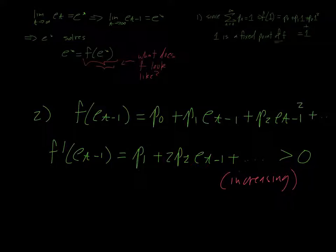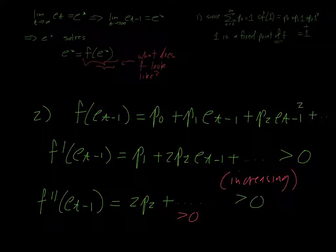And if we look at the second derivative, I'm assuming the first few probabilities here are positive. The idea is that you have some non-zero probability of having 0, 1, or 2 offspring. If you look at the second derivative, this is going to look like 2P2 plus a bunch of terms that are also positive. And so this entire thing is positive. And so not only is F increasing, but F is also concave up.